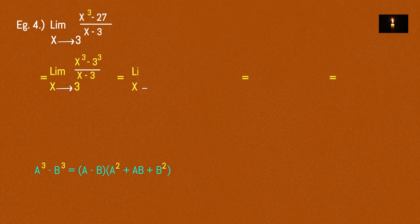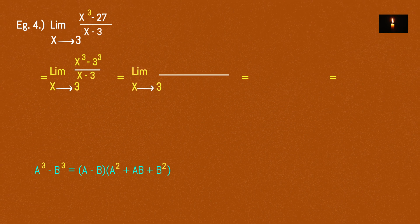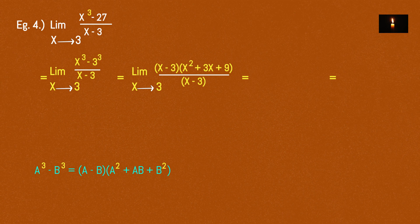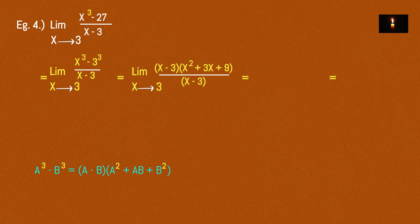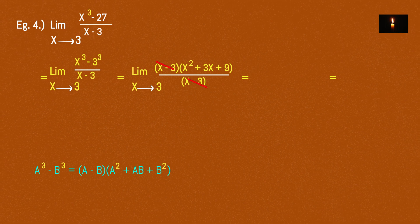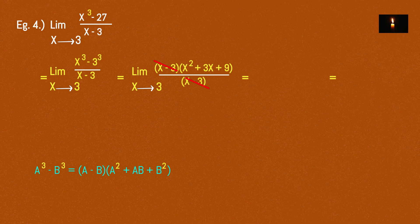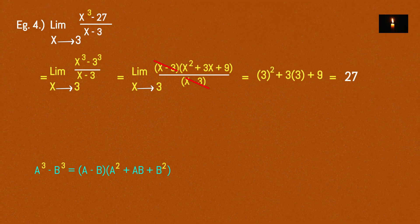This function is equal to x cubed. This is equal to a to the power cube minus b to the power cube, so a minus b times a squared plus ab plus b squared — that formula will be used. So the function becomes x squared plus 3x plus 9, and substituting x equals 3 gives 27.